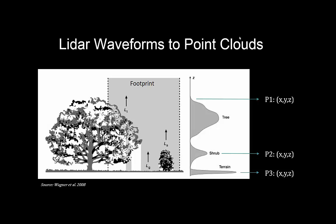So you don't get a single return either, because within that small area there will be different objects — particularly vegetation. You get leaves and whatnot, and so some of the photons will come back earlier, meaning they are higher above the ground surface than others. This is what this figure shows: on the horizontal axis you can think of the number of photons returning to the instrument, measured over time.